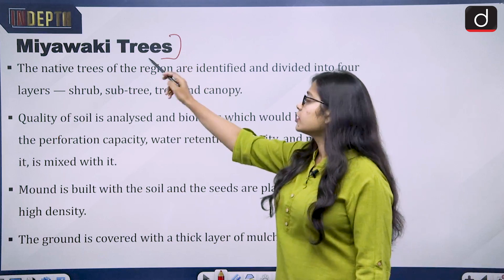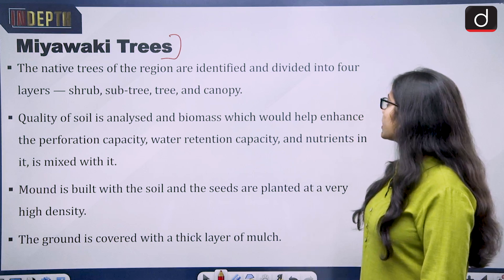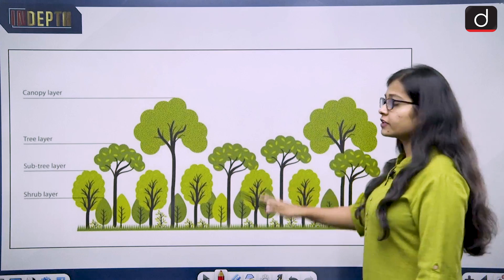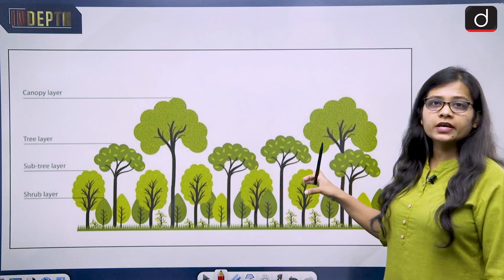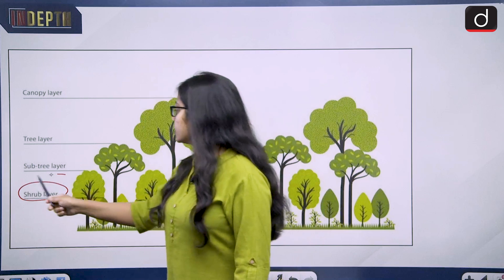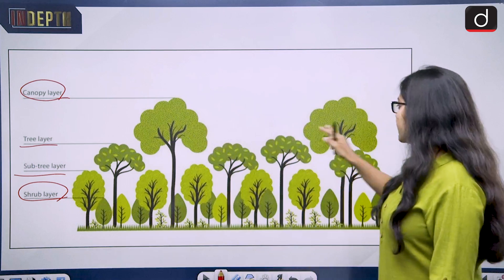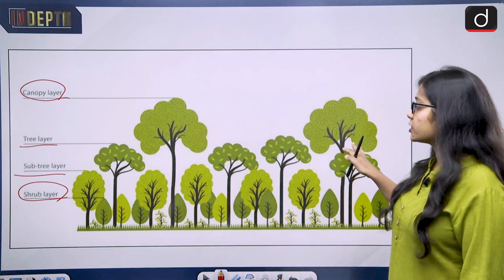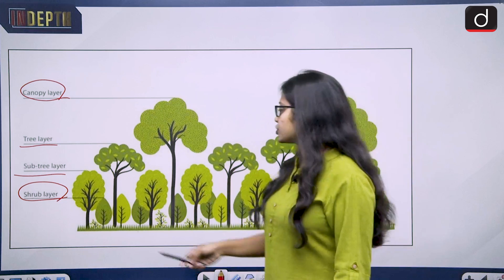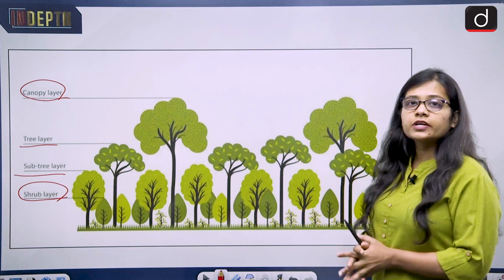The native trees of the region are identified and divided into four layers: shrub, sub-tree, tree, and canopy. Looking at the diagram: the smallest layer is the shrub layer, then the sub-tree layer, then the tree layer, and the largest are the canopy layers. The canopy layers are spaced apart, with tree layers in between, then sub-tree layers, and the shrub layer at the minimum — this is how density of trees and use of area is maintained.